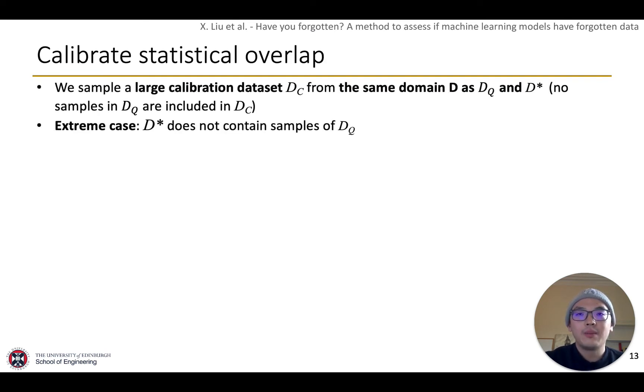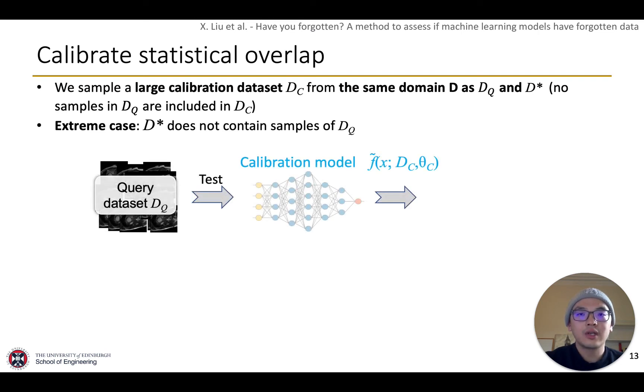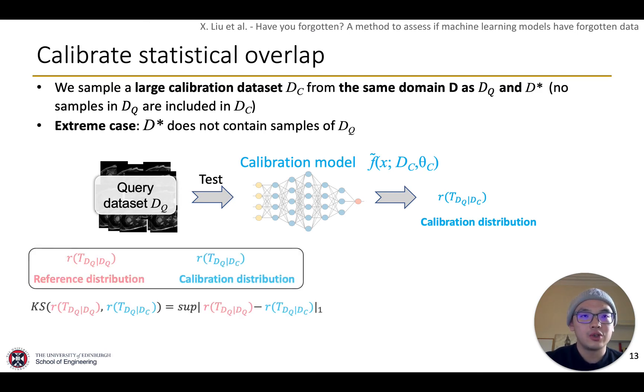We propose to sample a large calibration dataset, Dc, from the same domain D as DQ and D star. And Dc has no samples of DQ. This mimics the extreme case that D star does not contain samples of DQ. We train a new model called the calibration model with Dc and then we test it with DQ. Similarly, we can obtain a calibration confidence distribution. By comparing the reference distribution and the calibration distribution with KS distance, we obtain the calibration KS to calibrate the statistical overlap.